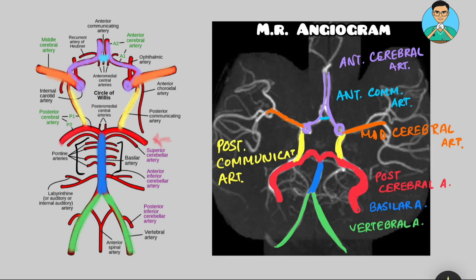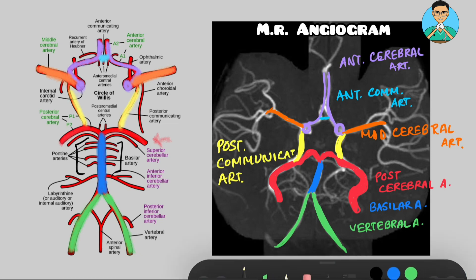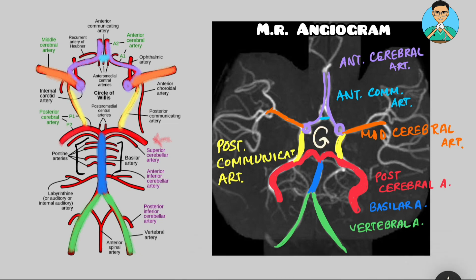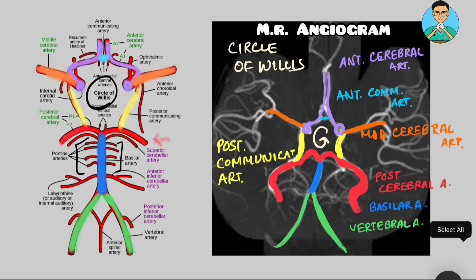Now this entire thing makes up a circle. This circle at the center that you can see is known as the circle of Willis, which is demarcated in the schematic over here.